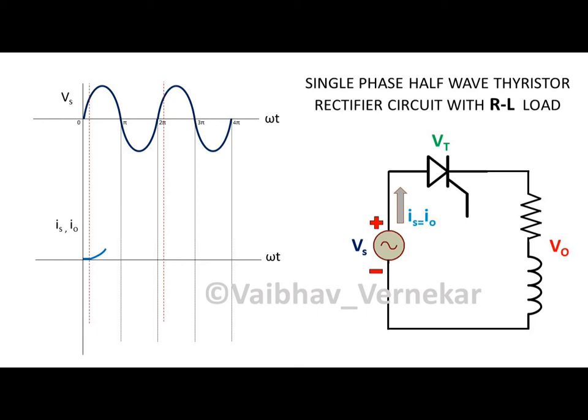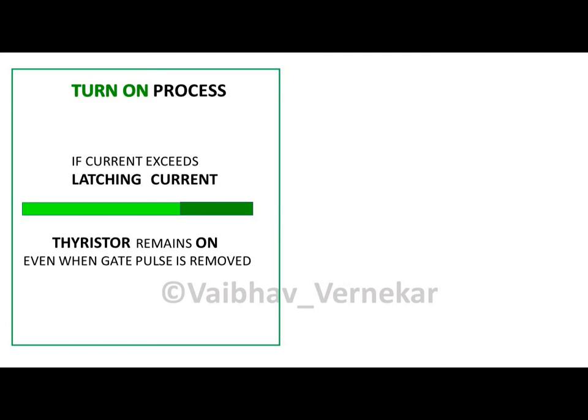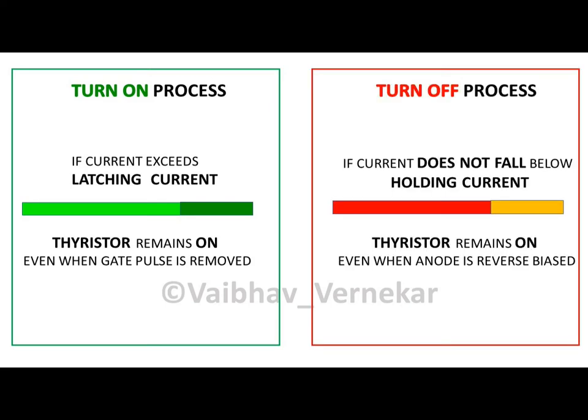The red dotted line is the instance of time at which the gate pulse is applied. During the turn-on process, the anode current has to attain a minimum value so that conduction continues even when the gate signal is removed. This current is called the latching current. Similarly, during the turn-off process, the anode current has to fall below a minimum value for the thyristor to stop conducting. This value of current is called the holding current.